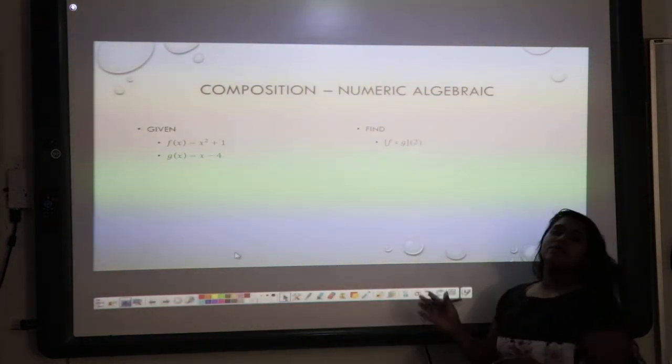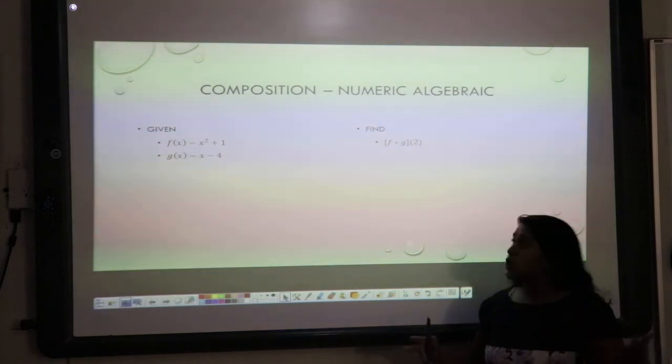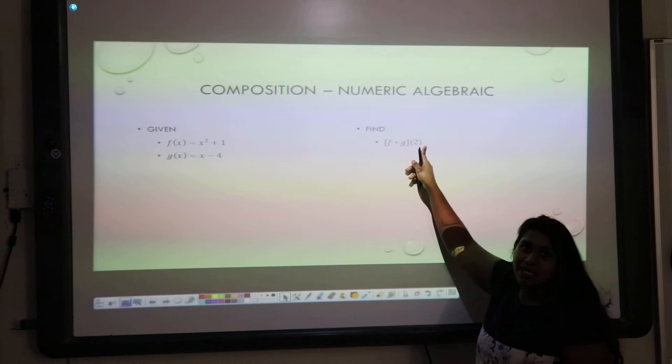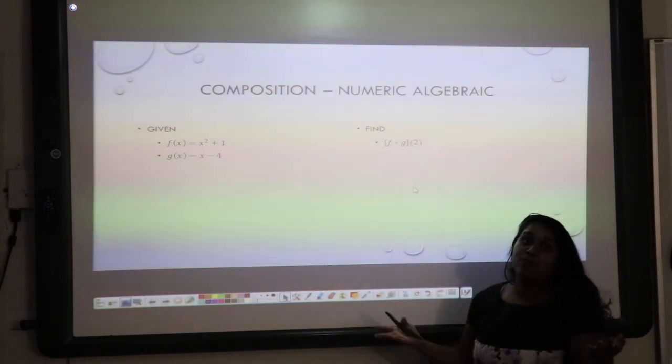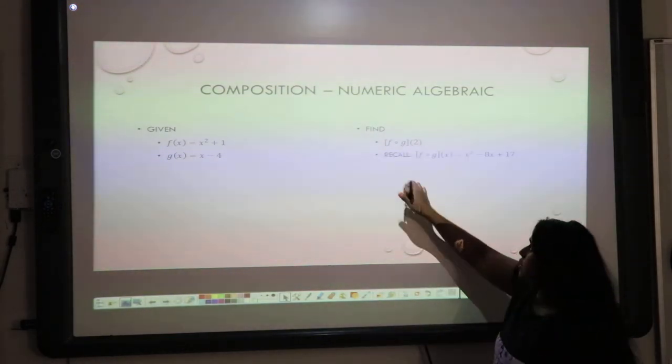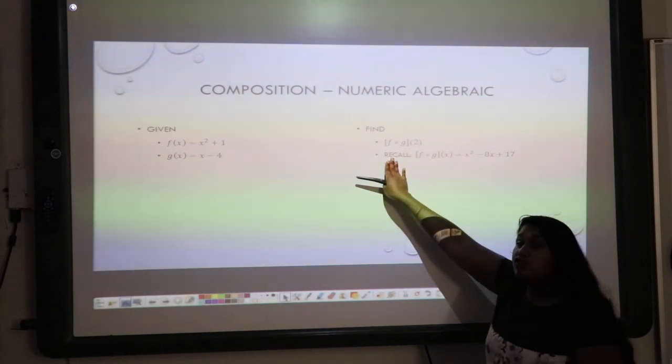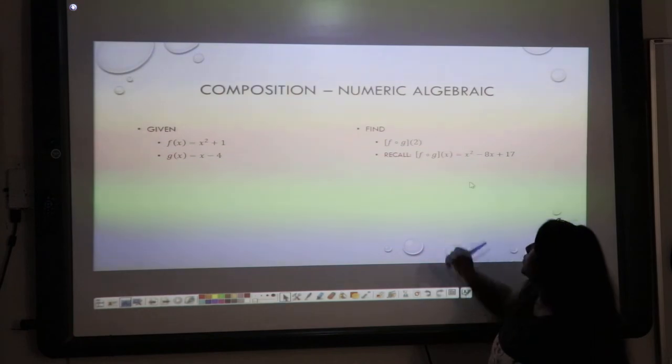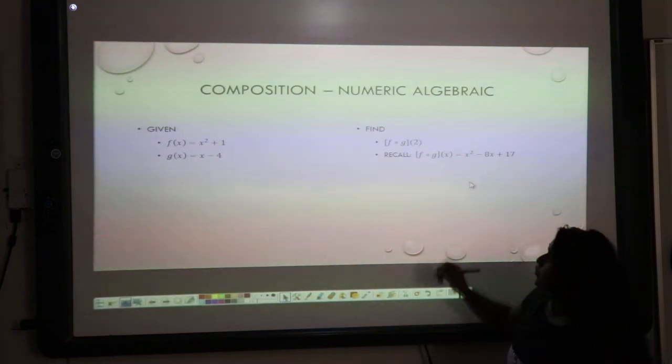Okay. What happens when they want to do a numeric solve? They give you f composed g of 2. Well, that's easy. I do the composition, and then I plug it in. The same way you always do numeric solves. We've already done f composed g. So, I'm going to have you recall that f composed g of x was equal to x squared minus 8x plus 17.